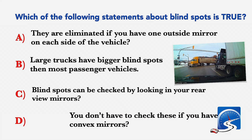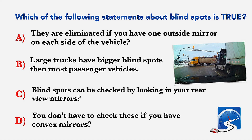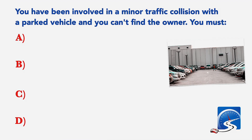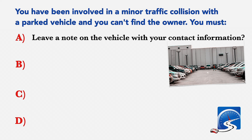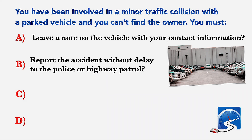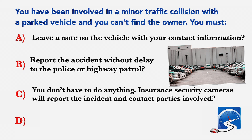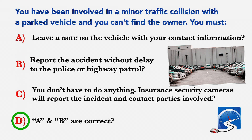You have been involved in a minor traffic collision with a parked vehicle and you can't find the owner. You must: A: Leave a note on the vehicle with your contact information. B: Report the accident without delay to the police or highway patrol. C: You don't have to do anything. D: Insurance security cameras will report the incident and contact parties involved. Correct answer D: A and B are correct.